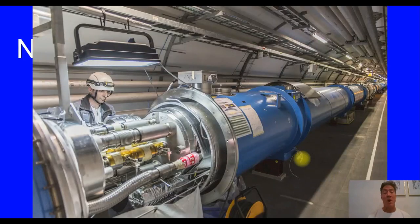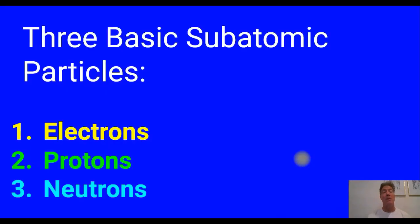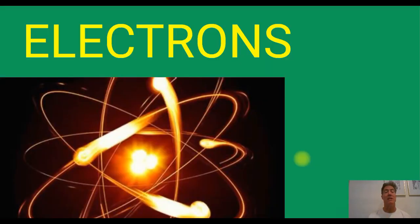Now we look at the structure of the atom, because it turns out that Dalton wasn't right about the atom being indivisible. It turns out it is divisible into three main subatomic particles. This is a particle accelerator. When you slam these particles together, you get all kinds of subatomic particles, and we can break them down even lower than that. But for our purposes, we are looking at three basic subatomic particles: the electron, the proton, and the neutron.